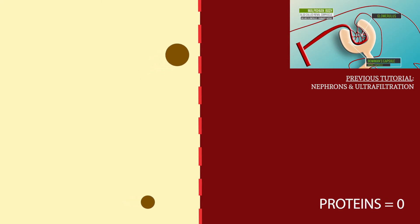As we saw in the previous tutorial, protein molecules are too big to pass through into the tubule, so the protein concentration in the proximal convoluted tubule is usually zero. However, in cases where really small protein molecules are filtered into the glomerular filtrate, they are all removed in the proximal convoluted tubule as we shall see.